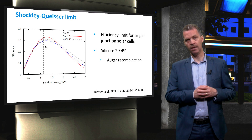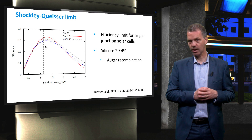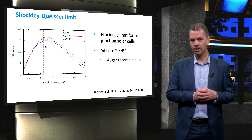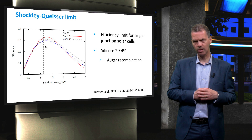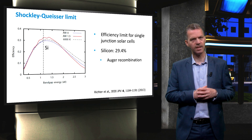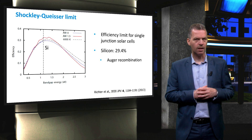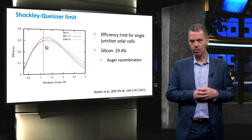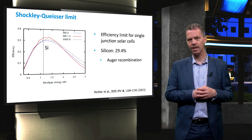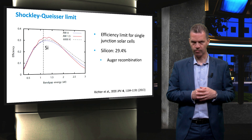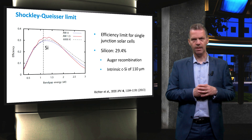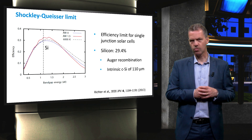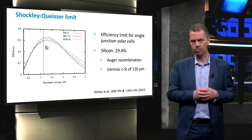This lower efficiency limit is obtained by taking into account Auger recombination rather than radiative recombination only, as is done for the Shockley-Queisser limit. In particular, in an indirect bandgap material as crystalline silicon, the Auger recombination mechanism is important and should be taken into account. To achieve this limit, the silicon wafer should be intrinsic and should have an optimal thickness of 110 µm.